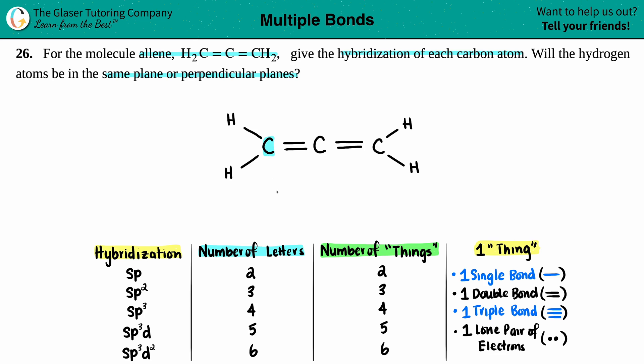Well, let's see. What has it got? Well, it's got one single bond. That's one thing. It's got another single bond. That's two things. And it's got one double bond. That's a total of one thing. So it seems like this carbon has three things. That's three letters. So, three things, three letters, SP2 hybridized.